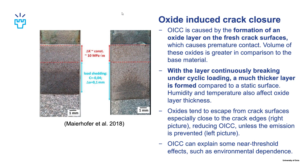Oxide induced crack closure is caused by the formation of an oxide layer on the fresh crack surfaces. Because the volume of these oxides is greater in comparison to the base material, it will cause premature contact. With this layer continuously breaking under cyclic loading, it will get much thicker compared to a layer that forms on a static surface, and this thickness is also affected by humidity and temperature. These oxides tend to escape from the crack surfaces, especially close to the crack edges, as we can see in the right picture.